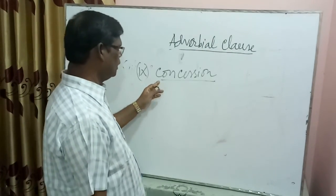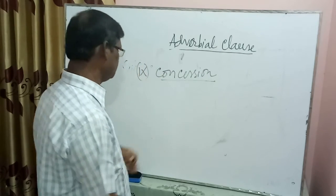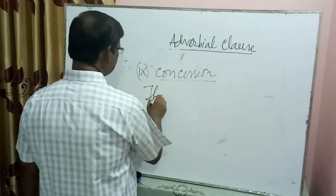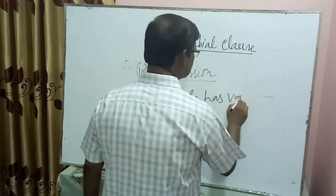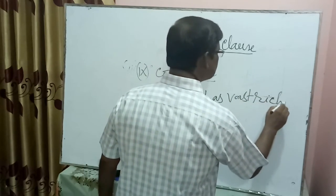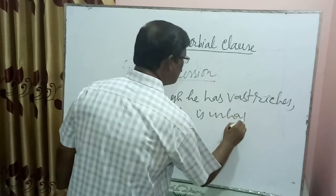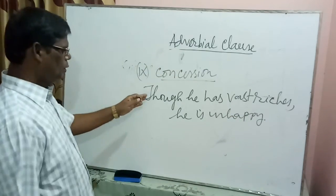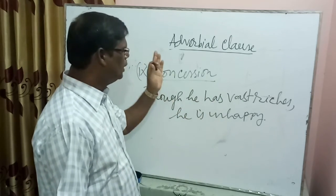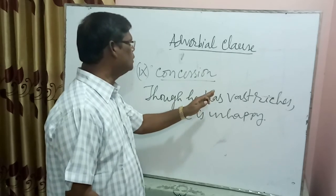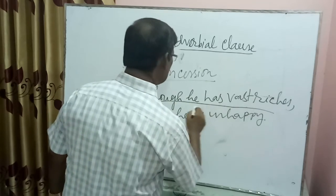Next is Concession. In an Adverbial Clause of Concession, opposite ideas are contained in both parts. For example: 'Though he has vast riches, he is unhappy.' He has vast riches, so he should be happy, but he is unhappy. This part is opposite to the other part. So this is an Adverbial Clause of Concession.